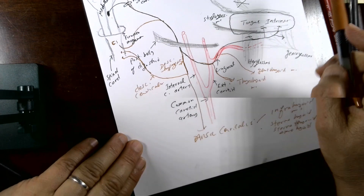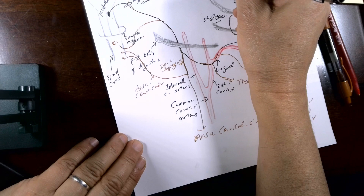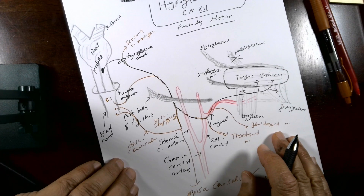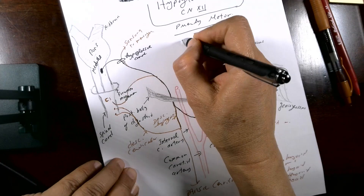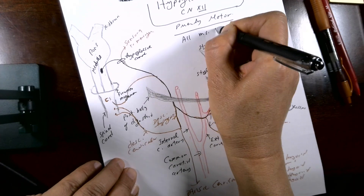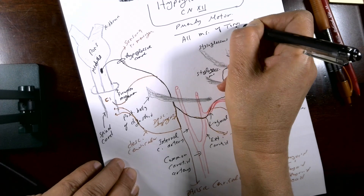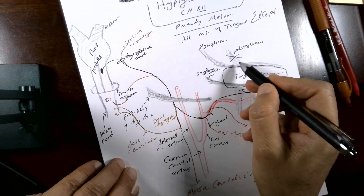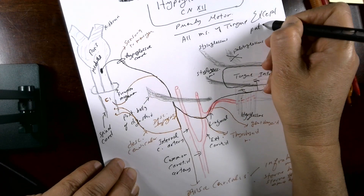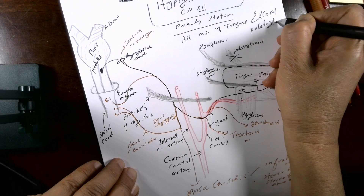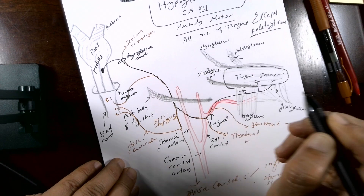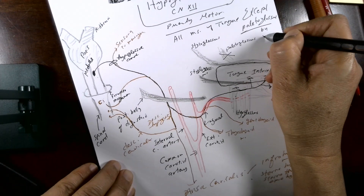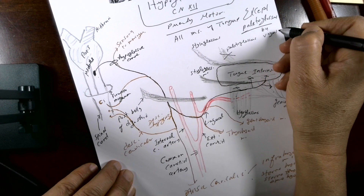At the end of the day, keep in mind that the only things supplied by the hypoglossal nerve itself are all muscles of the tongue — except one muscle, the palatoglossal muscle, which is supplied by the vagus nerve through the pharyngeal plexus.